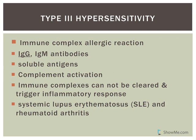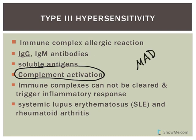Type 3 hypersensitivity also activates complement. Remember that both IgG and IgM involve the activation of complement, but none of the other antibodies do. The antibody classes are IgM, IgA, IgD, IgG, and IgE — it's only IgM and IgG that involve the activation of complement.